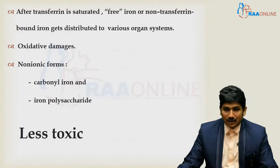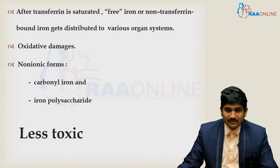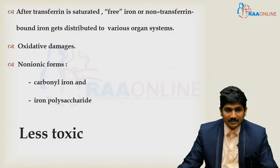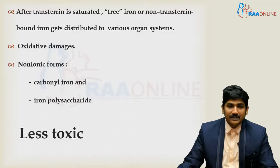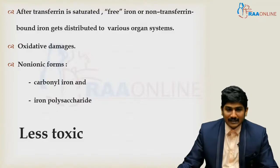The free iron, or non-transferrin-bound iron, gets distributed to various organ systems. It gets deposited from the thyroid and pituitary to the lungs, heart, kidneys, and liver, where oxidative damage begins. For reasons not clearly known, the non-ionic forms of iron are actually less toxic.